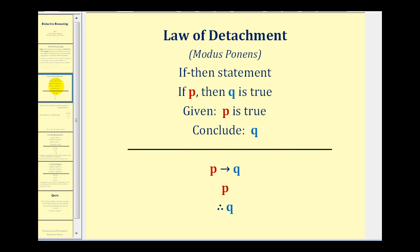This type of reasoning is also called the law of detachment or modus ponens, which states that if we have an if-then statement — if P then Q — which we know to be true, and we're given that P is true, we can conclude Q. Using notation it would look like this: if P then Q is true, given P, therefore Q.